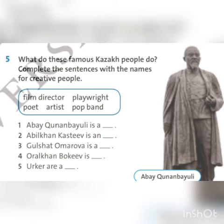And your home task is exercise number 5. What do these famous Kazakh people do? Complete the sentences with the names for creative people. Who is Abelknon Bayola? All of these exercises are on page 96. So, good luck, children!